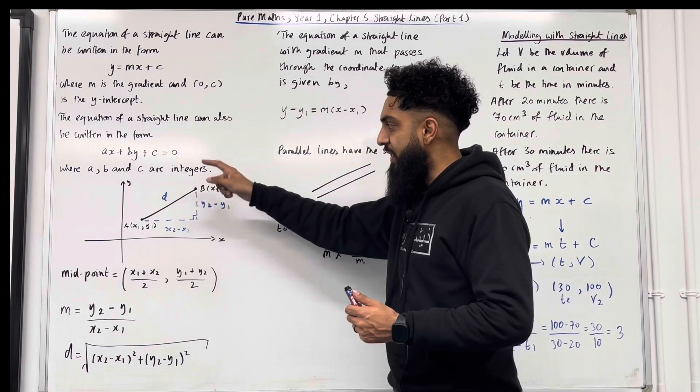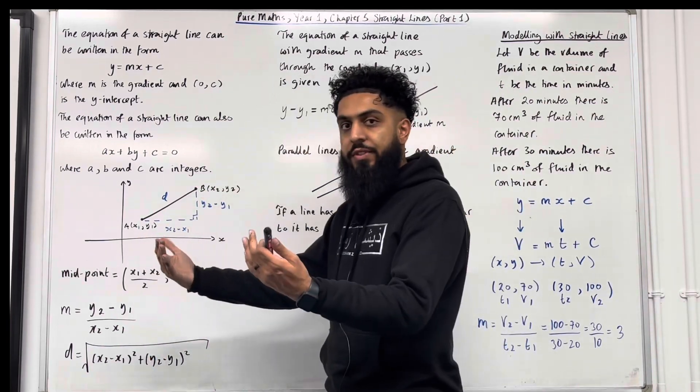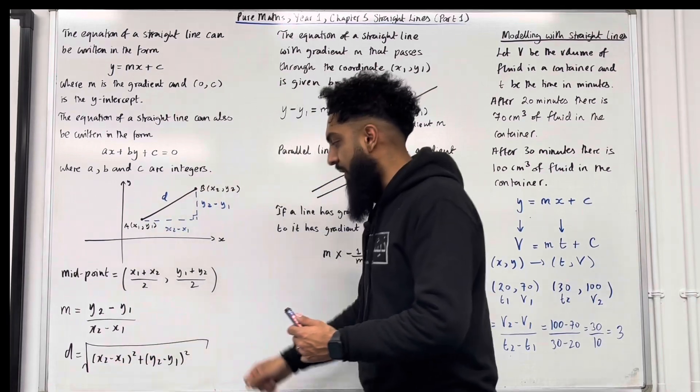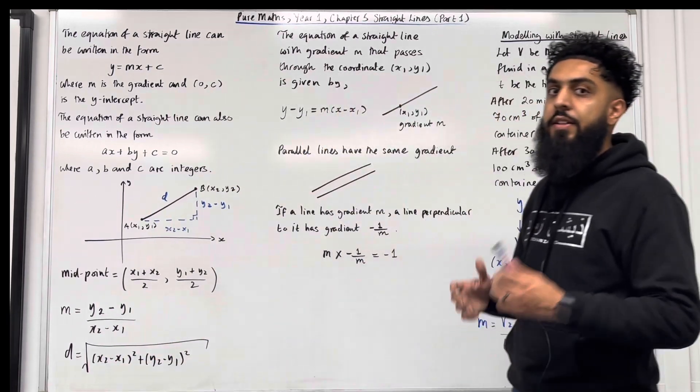To work out the distance D, using Pythagoras' theorem, we get square root of x2 minus x1 in bracket squared plus y2 minus y1 in bracket squared.